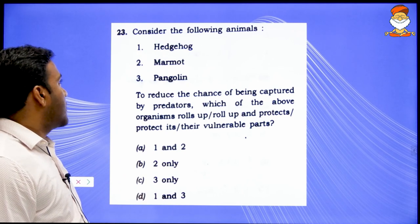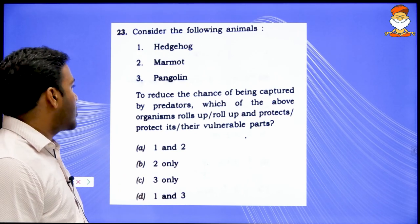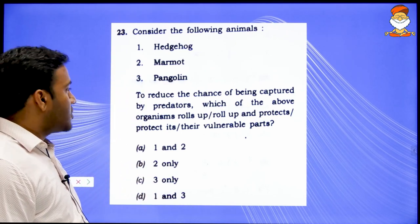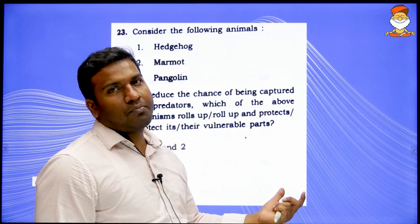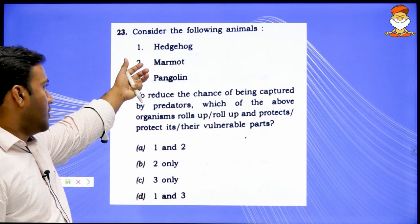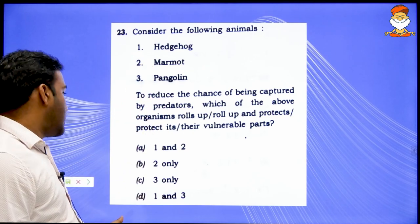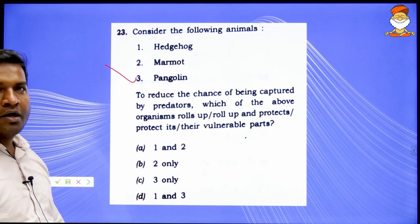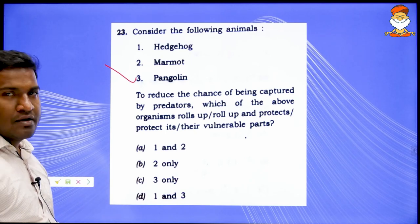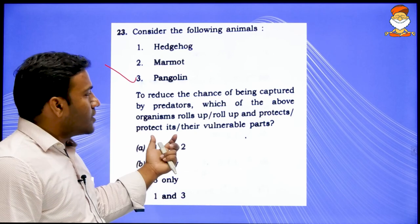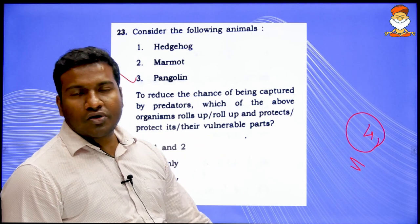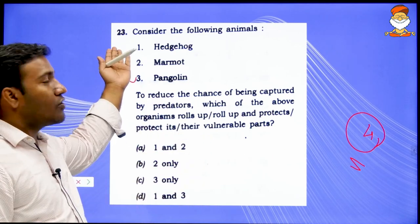Consider hedgehog, marmot, and pangolin — which rolls up to protect vulnerable parts from predators? Most probably you know pangolin. Option 3 only is also available. This depends on luck — if you have seen all these animals, you can answer; otherwise you cannot. We are leaving this question. So far we have left 4 questions out of approximately 20-25 attempted. Leaving 4 out of 25 is not a big issue.